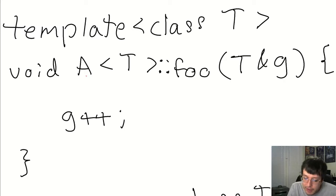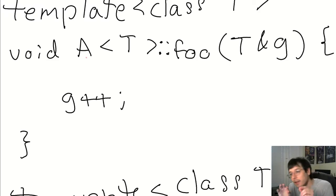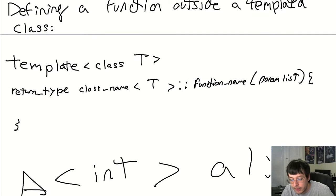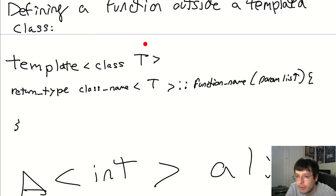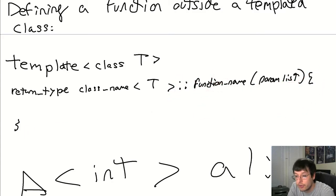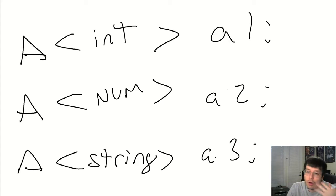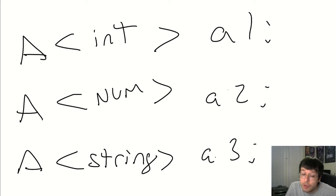You do have to write template, class T, and furthermore, when you're putting the class name with the scope resolution operator, you've got to put in the template variable like you see there. So it looks weird to have the class name and then the T part — but that's all because of the template. Once you do that, everything else is the same. As a cheat sheet: you write template, class, the template identifier T, your return type, your class name with that same letter, your scope resolution operator, your function name, your parameter list, and your code.